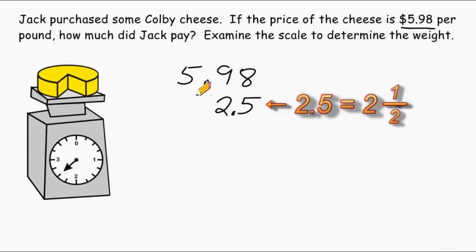So if we multiply $5.98 by the weight, which is two and a half pounds, that would give us the total amount that Jack will have to pay for the Colby cheese.